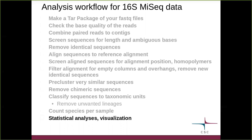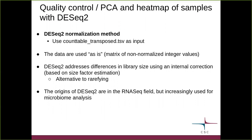When we're wanting to do some quality control and visualization, we can use the DESeq2 tool in Chipster for that. The input file for this is the count table transposed TSV, so we're using the data without any transformations or other changes. The data in this case will consist of a matrix of non-normalized integer values.